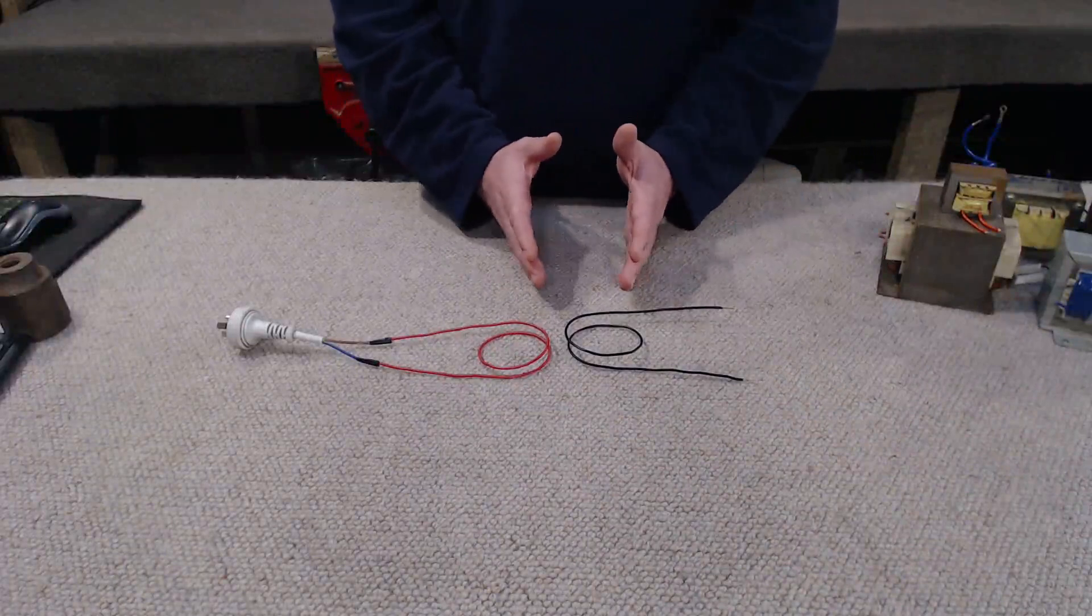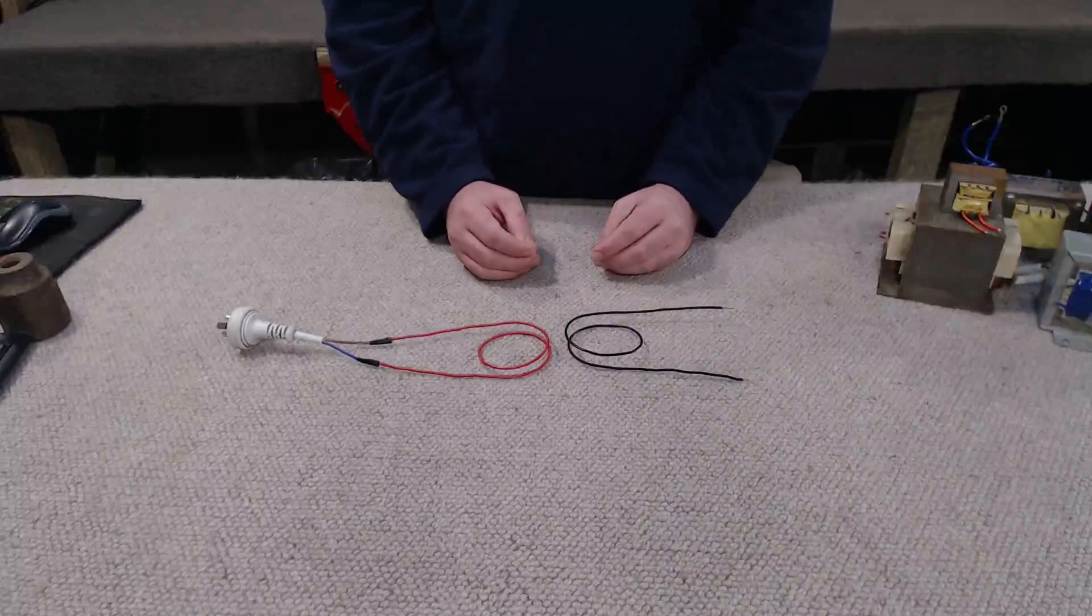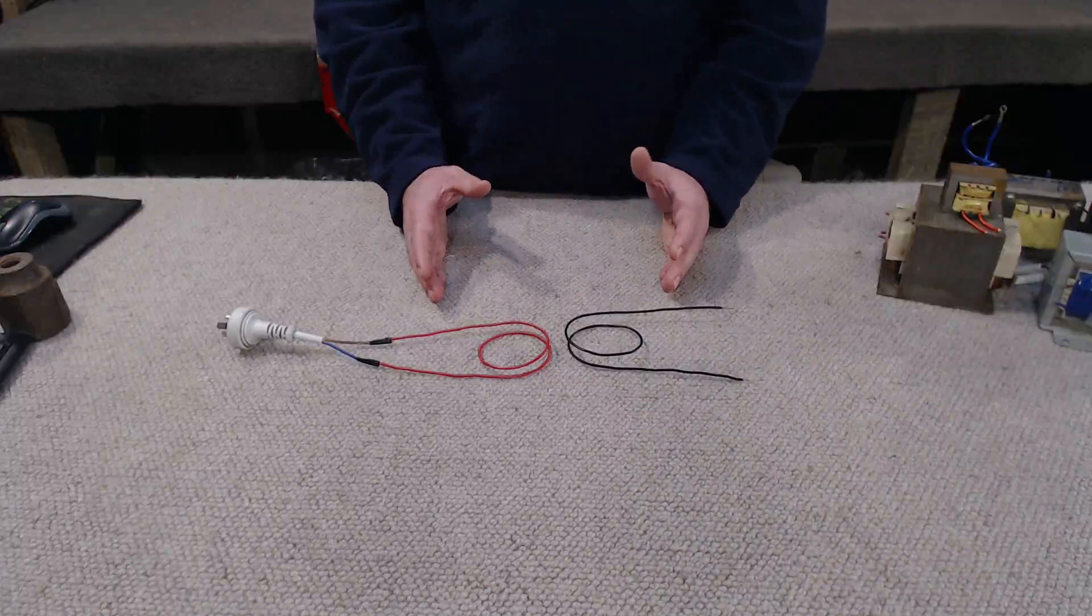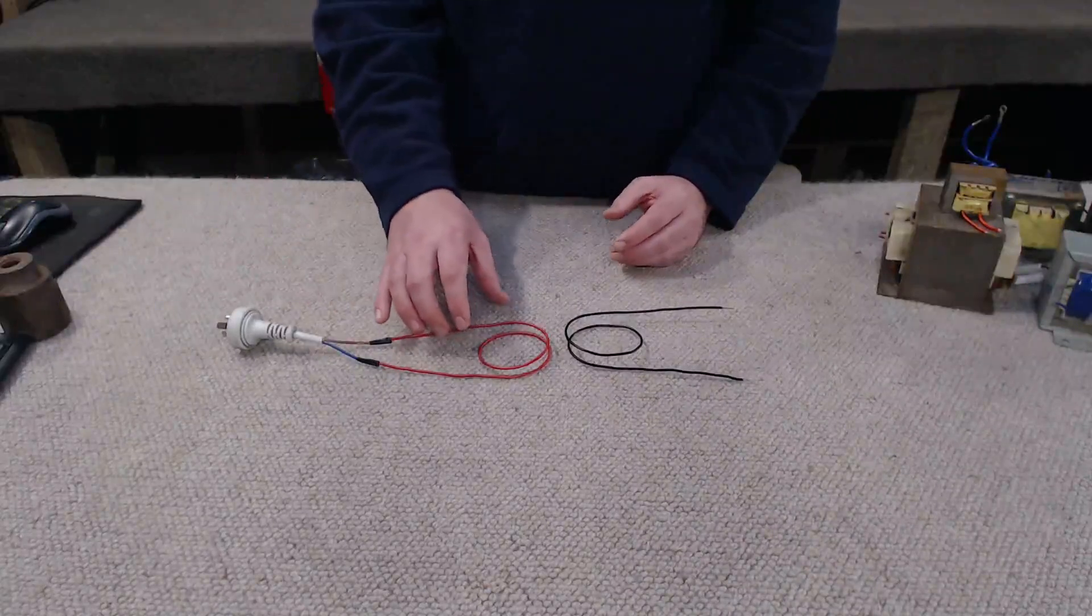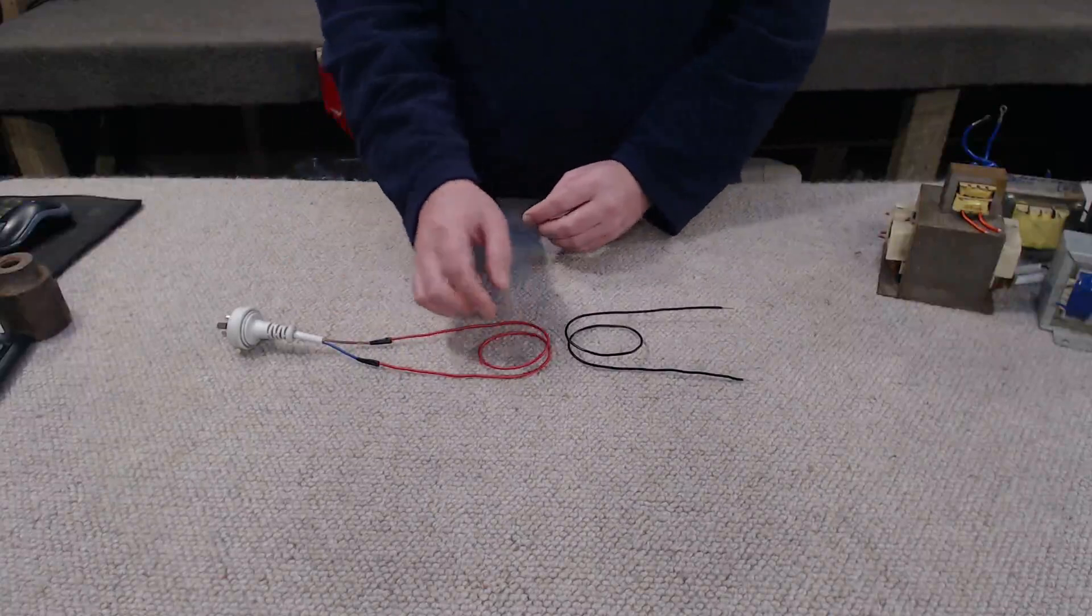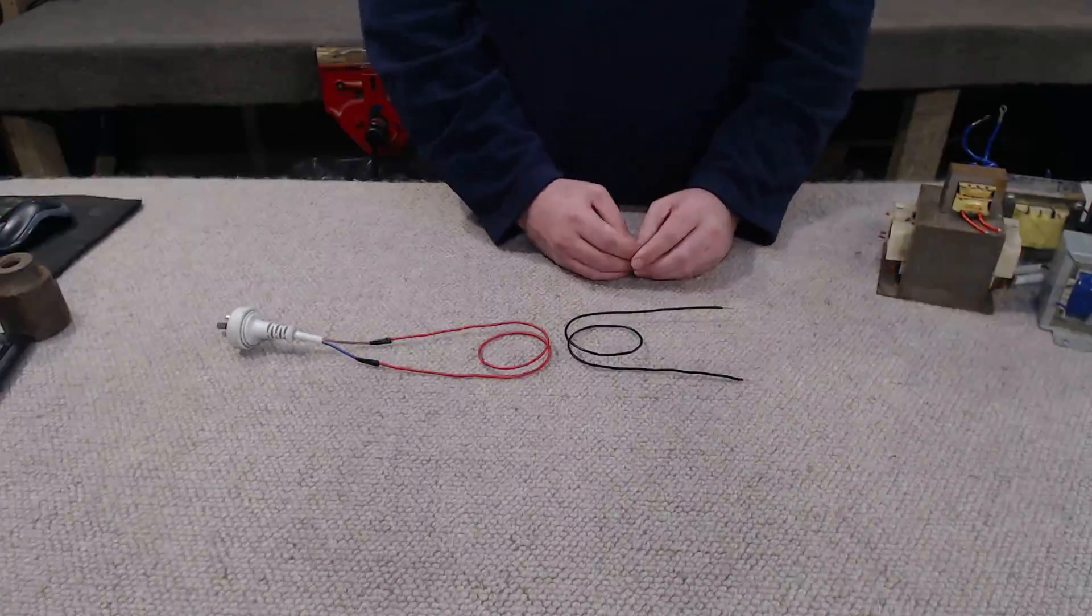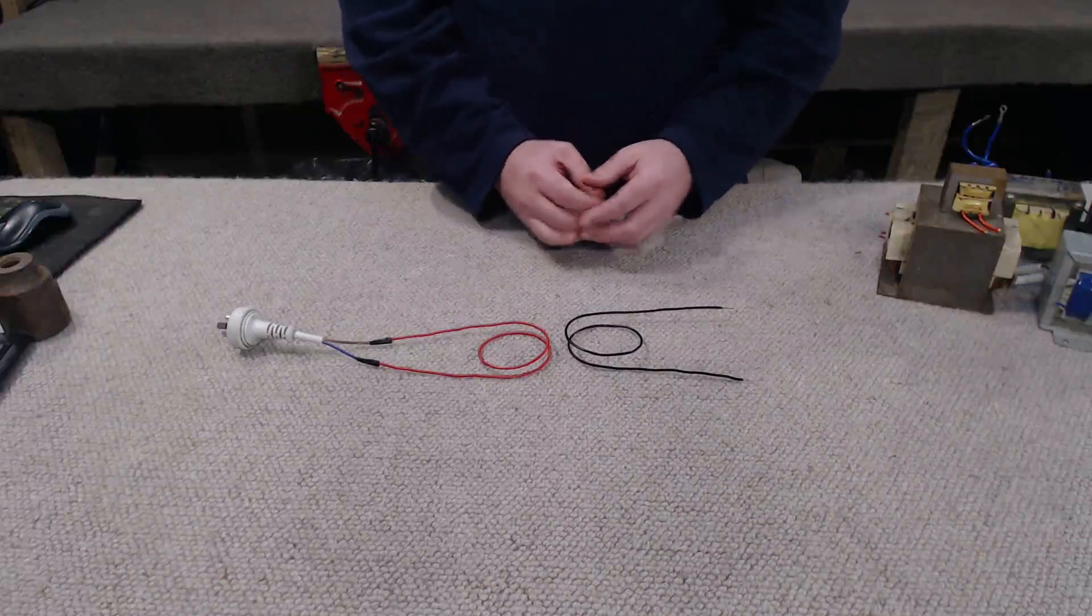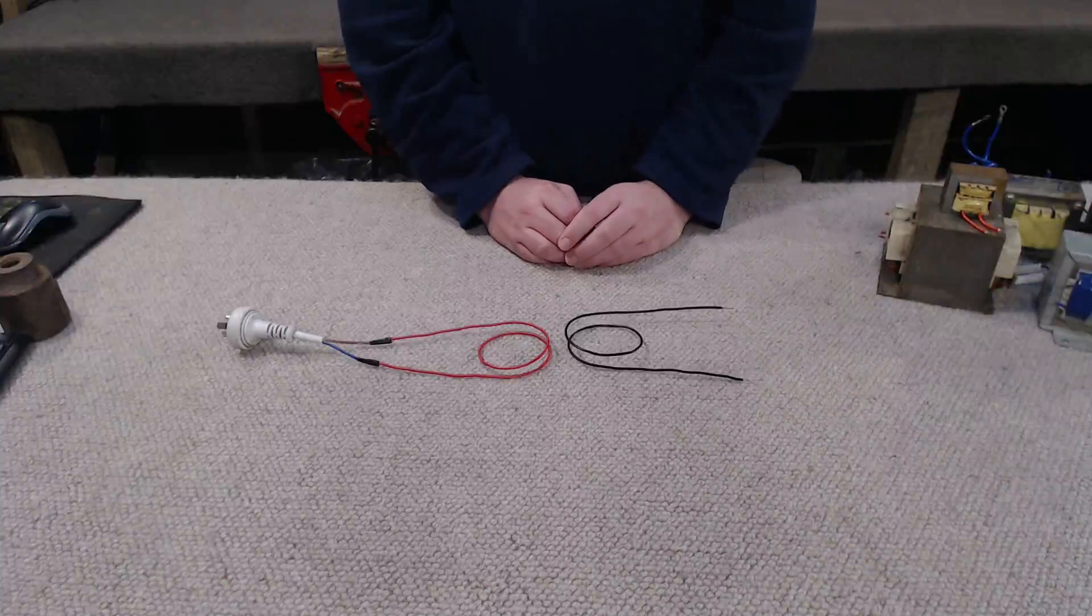Well, this has to do with the relationship between the primary and secondary and the amount of turns they have on each winding. So let's make up a hypothetical scenario. Let's say we have 220 volts coming into our primary winding here, and our hypothetical primary winding has 100 turns of wire on it. And let's say our secondary also has 100 turns of wire on it. Because we have a one to one ratio between our primary and secondary, our output voltage is going to be exactly the same, 220 volts.